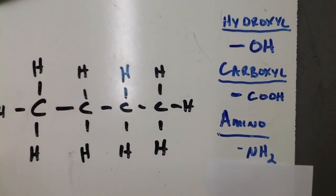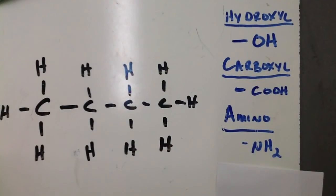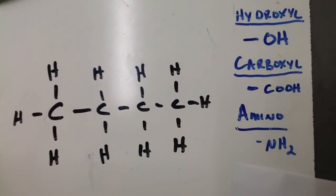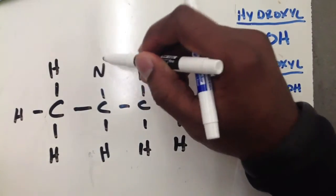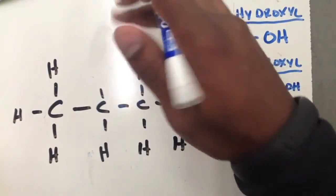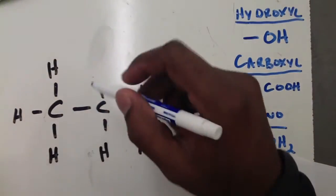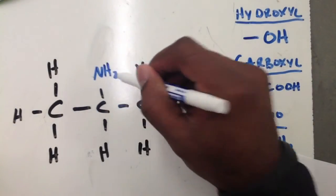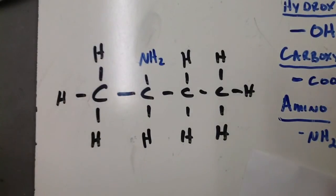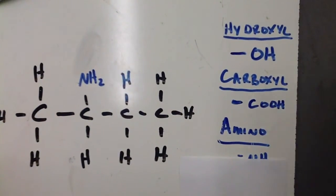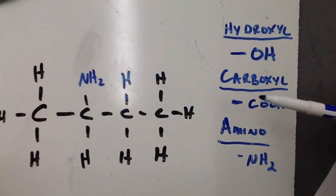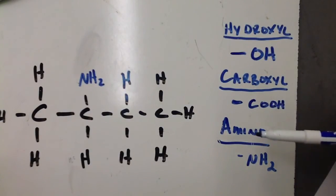The third functional group is called the amino group, which contains one nitrogen and two hydrogen atoms (–NH₂). If we take this functional group and substitute it for one of the hydrogens in a hydrocarbon, we get a substituted hydrocarbon. To summarize: commit to memory the hydroxyl group (–OH), the carboxyl group (a carbon with two oxygens and a hydrogen), and the amino group (a nitrogen with two hydrogens).